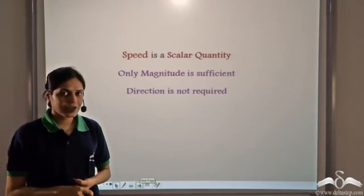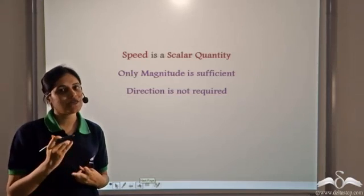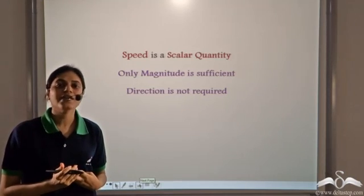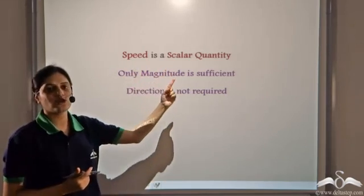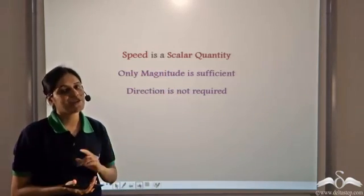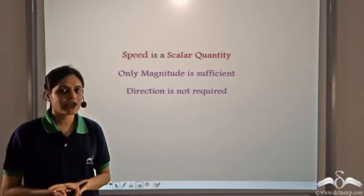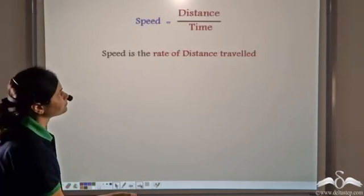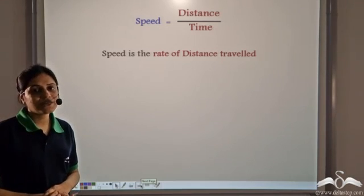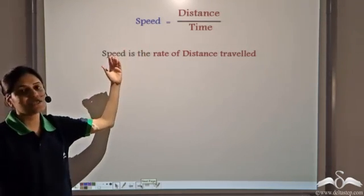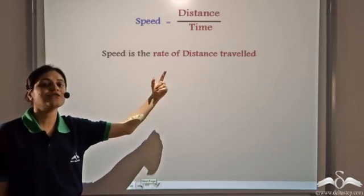Speed is a scalar quantity because distance is a scalar quantity and time is a scalar quantity, and speed is a relation between distance and time. So speed is also a scalar quantity, and we require only magnitude to describe speed — no direction is required. Speed is equal to distance divided by time; that is, speed is the rate of distance travelled.